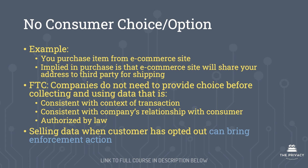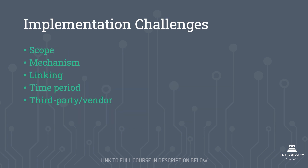We're now going to talk about five types of implementation challenges. These include scope, mechanism, linking, time period, and third party/vendor. I'm going to define and give examples of all of these.